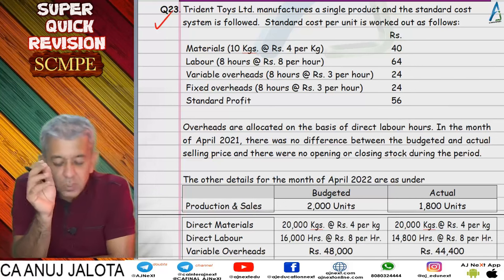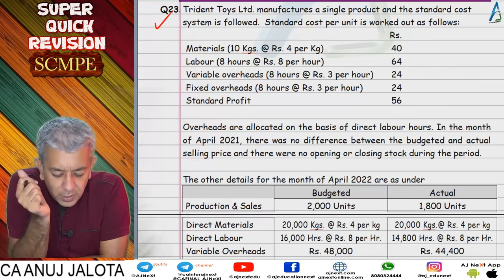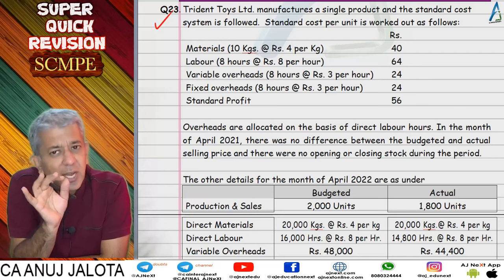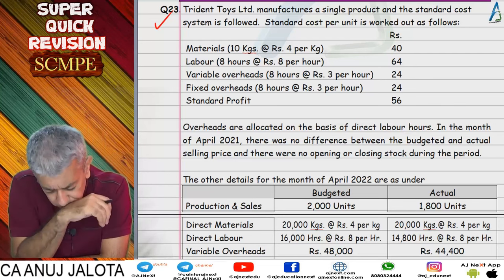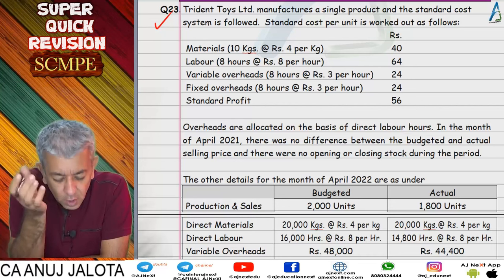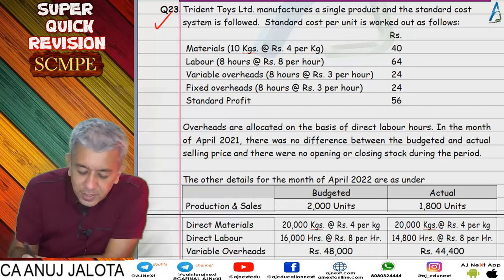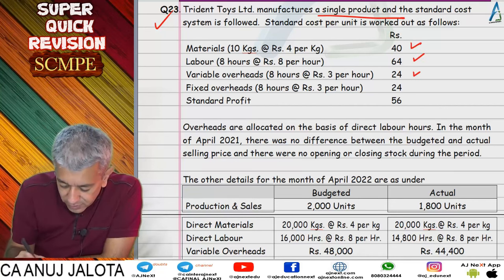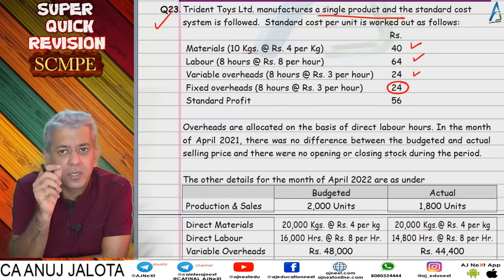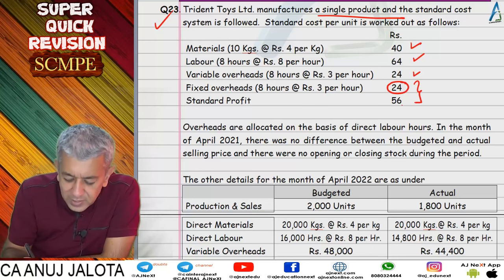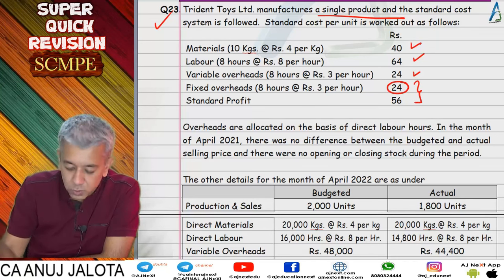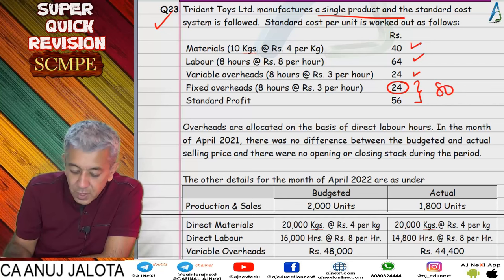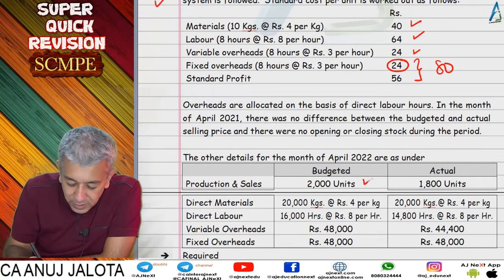Question 23 is a special question asked in May 2018 and also in January 2021 exams (with slightly different numbers). It links standard costing to limiting factors. The company manufactures a single product with material, labor, variable overheads, and fixed overheads given per unit — so absorption costing. Fixed overheads per unit plus profit per unit equals contribution of 80 rupees per unit. Company had thought it would make 2,000 units — so 20,000 kgs of material and 16,000 labor hours budgeted.